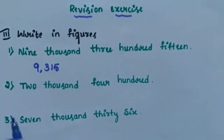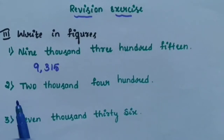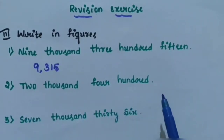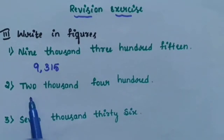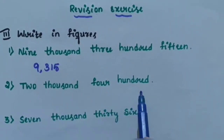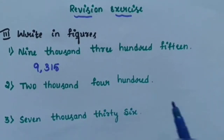Next, sub-question 2: 2400. 2 is in the 1000s place, 4 is in the 100s place.